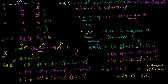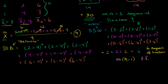Now let's think about how many degrees of freedom we have in this between-groups calculation. If you know the mean of means and you know two of the sample means, you can always figure out the third — because the grand mean is the mean of these sample means. So in general, if you have m groups or m means, there are m minus 1 degrees of freedom. With that said, in this case m is 3, so there are 2 degrees of freedom.